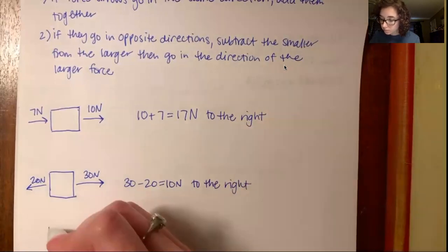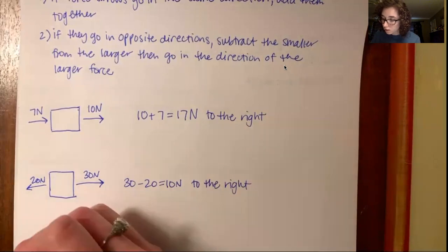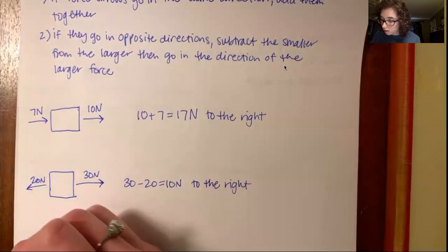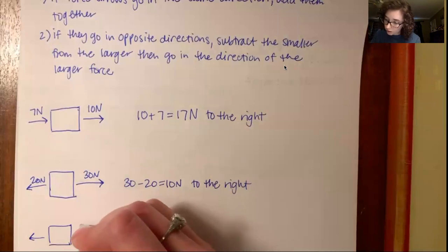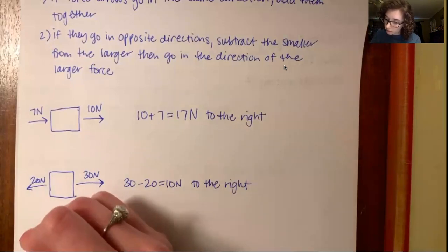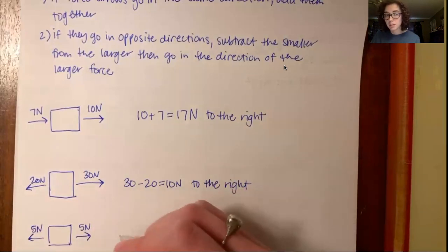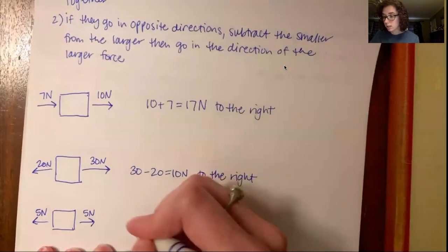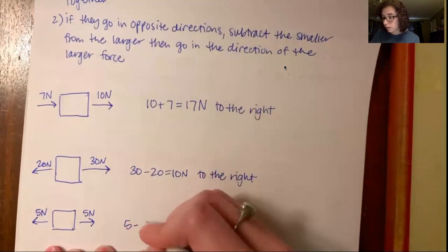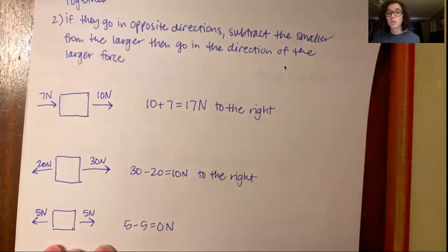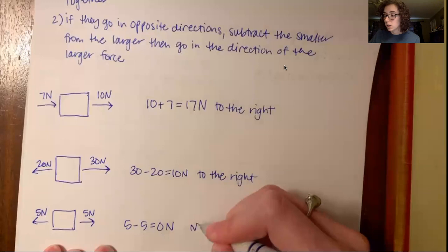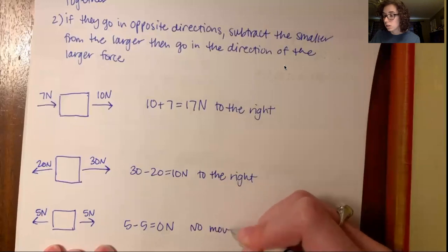Okay, so now I'm going to do one more. We're going to go 5 Newtons to the right and 5 Newtons to the left. So what happens here is you do 5 minus 5 equals 0 Newtons. Okay, so this means that there is going to be no movement.